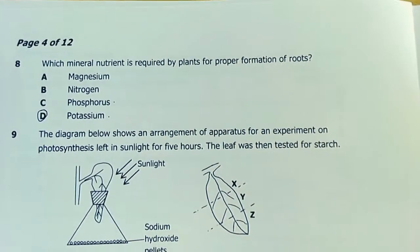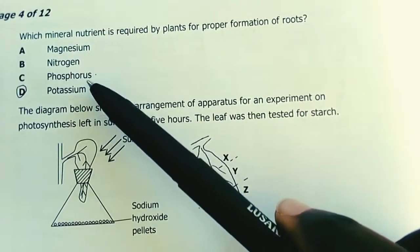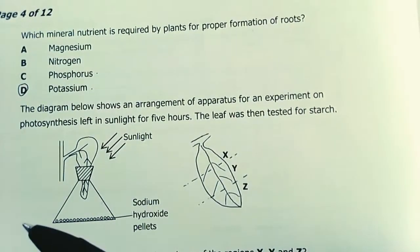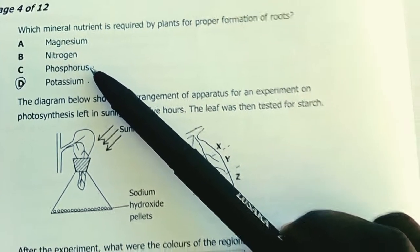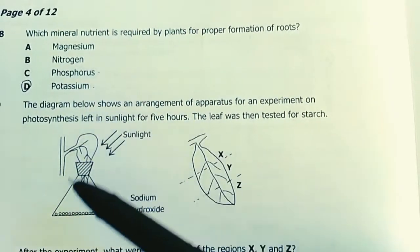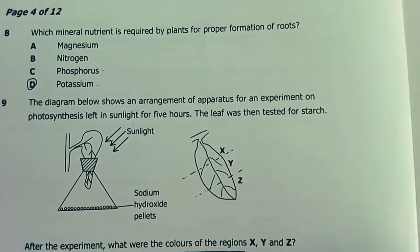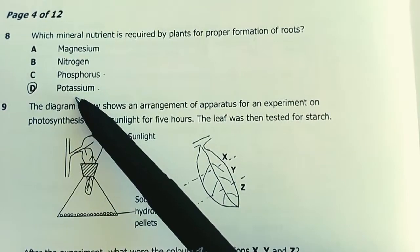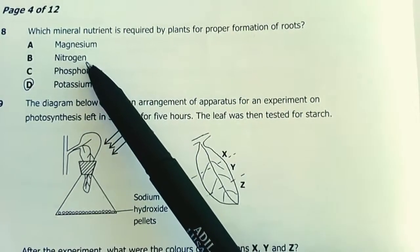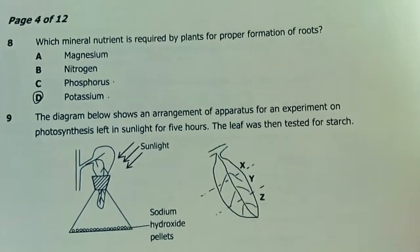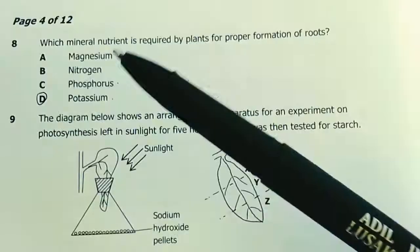Number 8. Which mineral nutrient is required by plants for proper formation of roots? Both are needed by plants so much, but phosphorus is involved in formation of ATP, adenosine triphosphate, and in proteins that have phosphorus. Potassium is the one needed most for roots, but phosphorus is also needed. Nitrogen is involved in protein formation, magnesium in chlorophyll formation. The answer here is D.